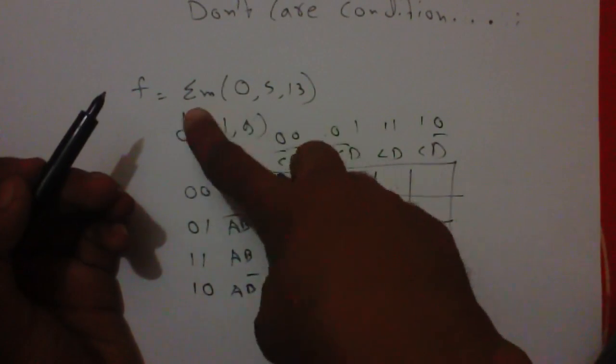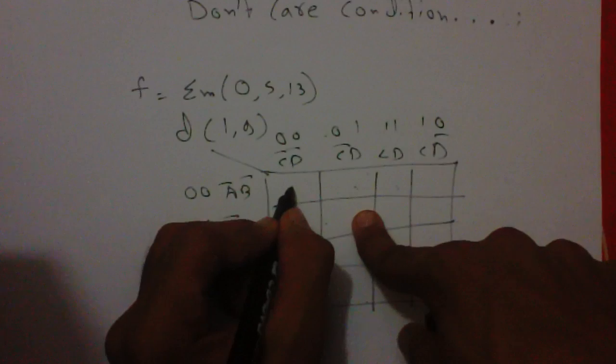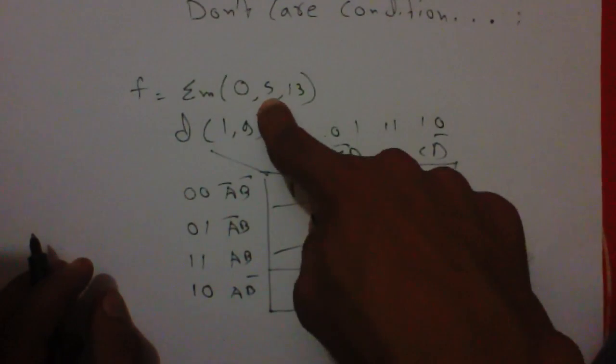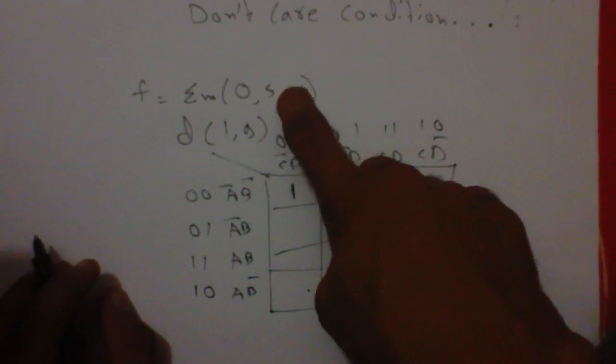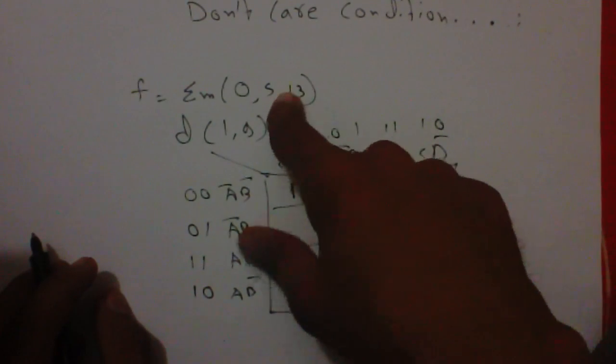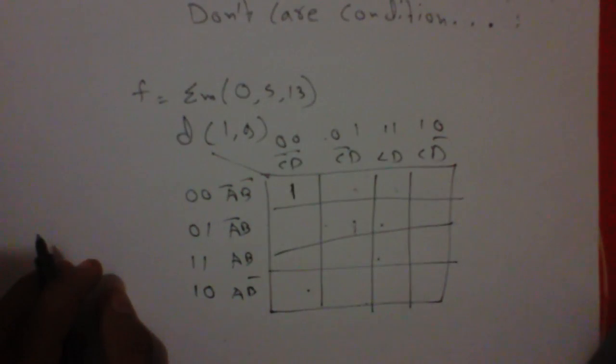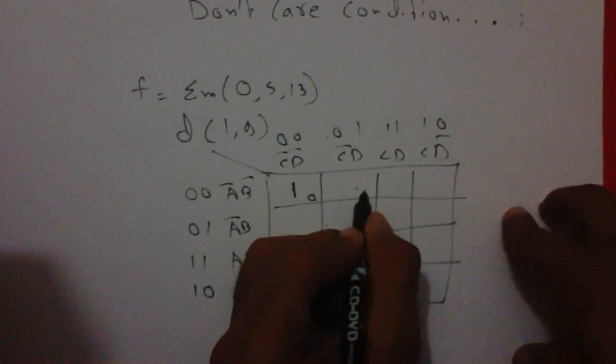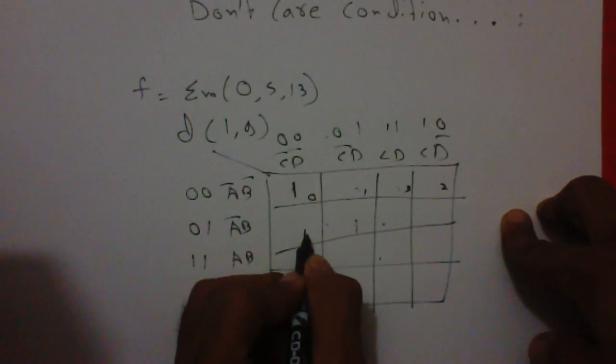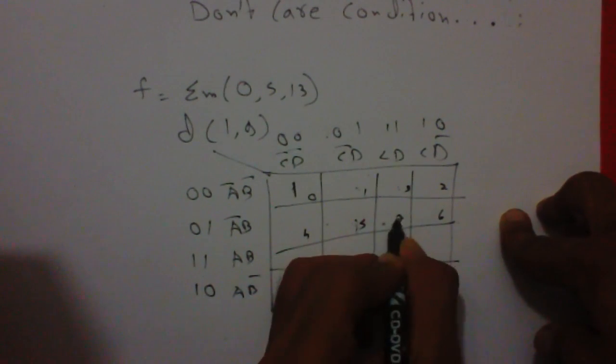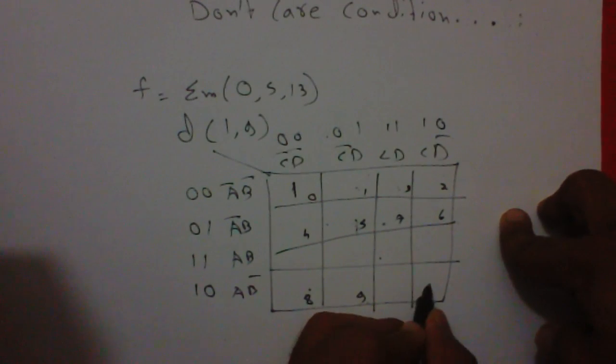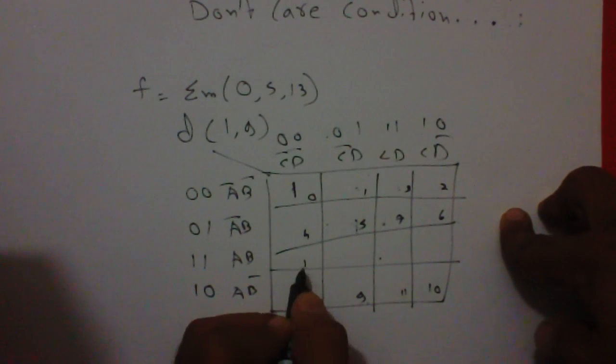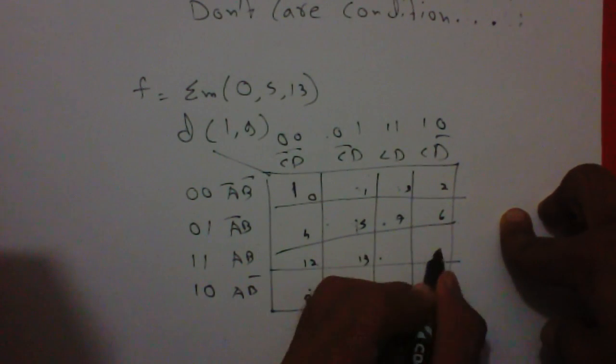The first term is 0 for min term so it will be denoted 1 here. Second is 5, so the binary number of 5 is 0. Let's write here 0 through 15. This is simpler way.